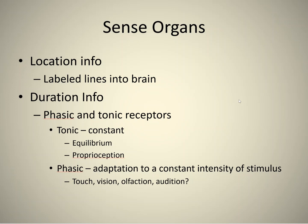Tonic receptors are on all the time — they're constant, and it doesn't matter whether the stimulus changes or not, they're always there. Two great examples of tonic receptors are equilibrium receptors, where you're always sort of balanced, and proprioception, which tells you where your limbs are in space. Those proprioceptors are always on. Versus phasic receptors, which adapt to a constant intensity of stimulus — if the stimulus doesn't change, the sensation will actually decrease and be gone.